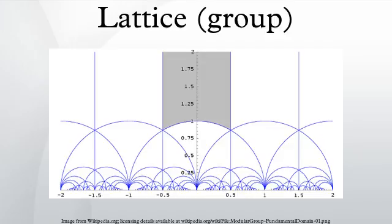In mathematics, especially in geometry and group theory, a lattice in ℝⁿ is a discrete subgroup which spans the real vector space. Every lattice can be generated from a basis for the vector space by forming all linear combinations with integer coefficients. A lattice may be viewed as a regular tiling of a space by a primitive cell.